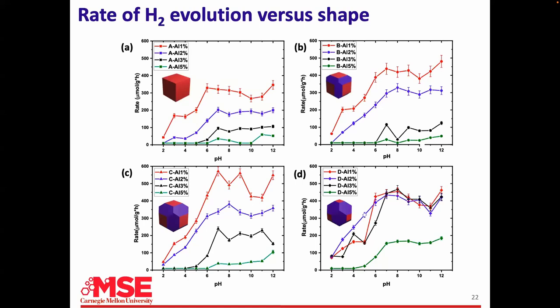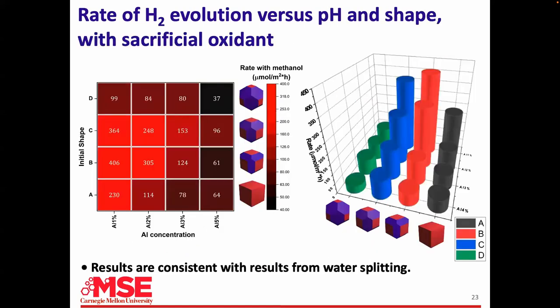When we put methanol in to use that trick to make it easier, we generate a ton of hydrogen and get exactly the same trends. When you put methanol in, you aren't really splitting water — you're making CO2 from the methanol oxidation.